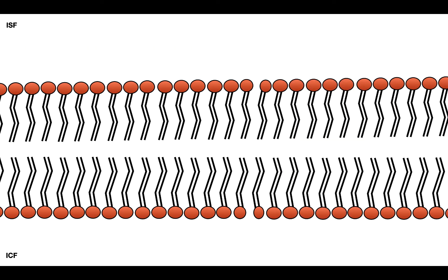The first thing we have to talk about is the way in which water moves across membranes. The only way in which water is going to move across membranes is via passive transport. The transport of water is always going to be passive across cells, and no water pumps have ever been described.